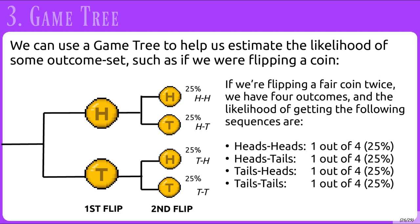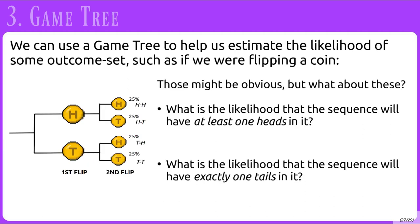Then if we are flipping a fair coin twice, we have four outcomes, and the likelihood of getting the following sequences are: heads-heads one out of four, or 25%; heads-tails, tails-heads, and tails-tails will also all be the same. So asking the probability of getting heads-heads, heads-tails, tails-heads, or tails-tails might be obvious — 25% each.